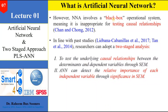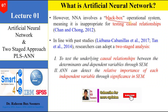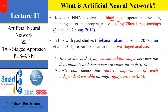However, ANN involves a black box — a concept meaning it is inappropriate for determining causal relationships. If you want to find out the causal relationship between dependent and independent variables, this tool is not useful because it operates like a black box. We do not know what is happening inside, because the software creates different hidden layers and we cannot see what is inside those hidden layers. Because of the black box, it cannot test a causal relationship between dependent and independent variables.